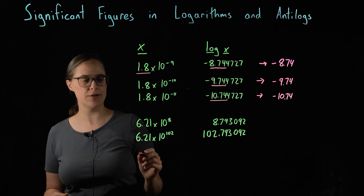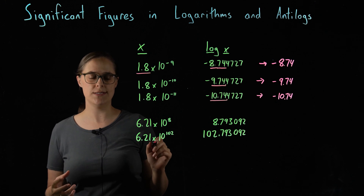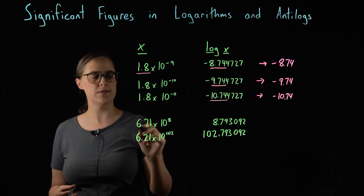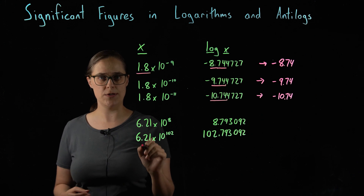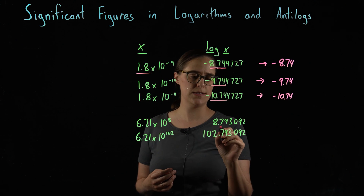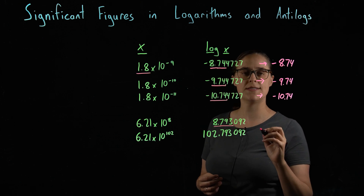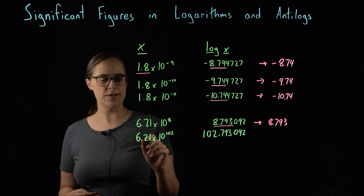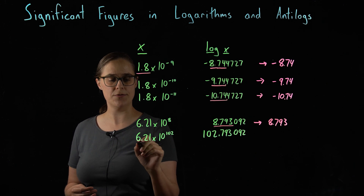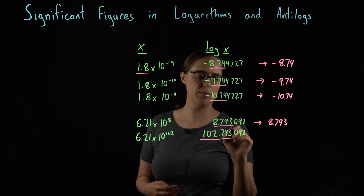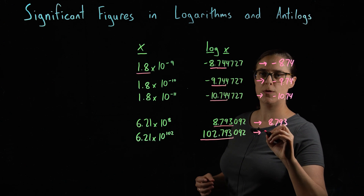Let's look at the last two examples. We have a different coefficient, 6.21, so we have different digits after the decimal place, but the same concept applies. The log of 6.21 times 10 to the eighth equals 8.793092. 6.21 has three significant figures, so this log has three significant figures after the decimal point. We need to round this to 8.793. And for our final example, 6.21 times 10 to the 102 power — same concept, three significant figures — so this needs to be rounded to 102.793.